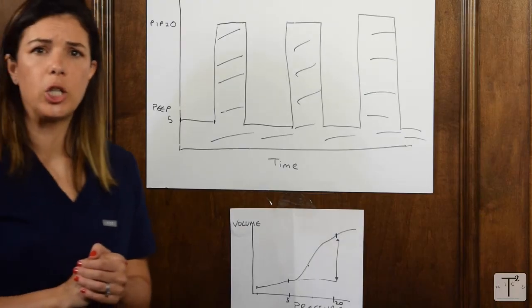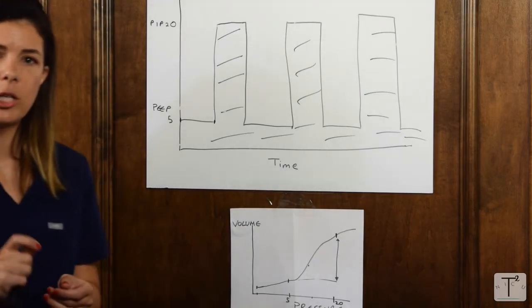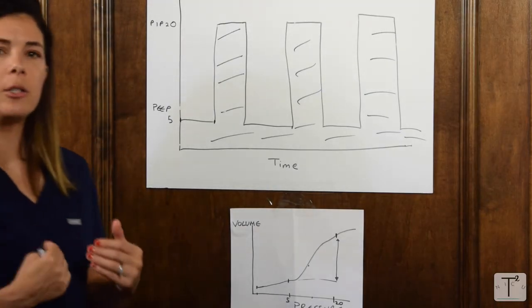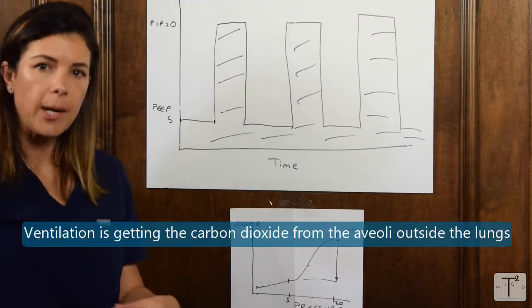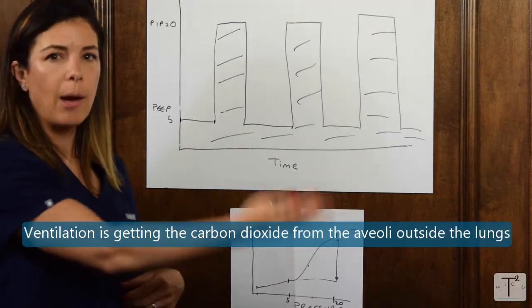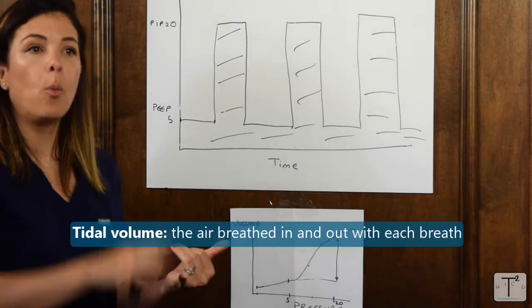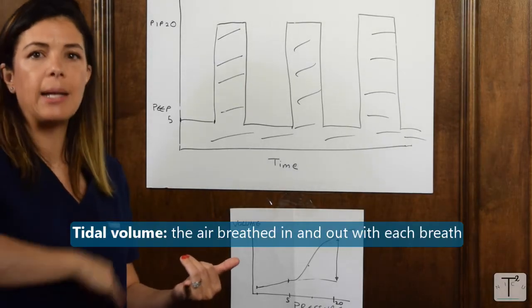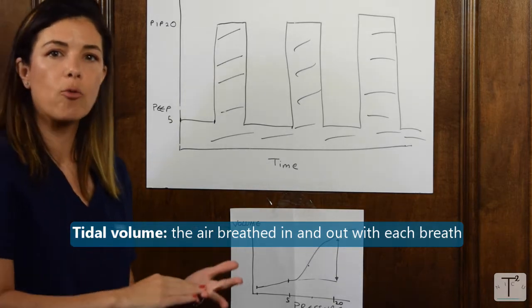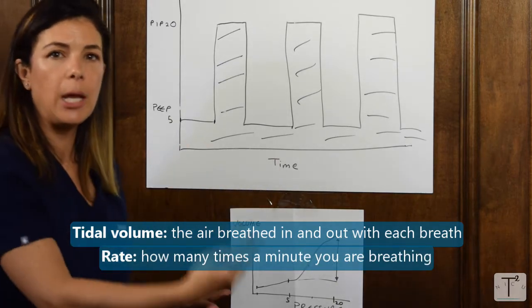Now let's talk about ventilation. What did we say that ventilation was dependent on? What are we trying to do with ventilation? We're trying to get the carbon dioxide from the alveoli outside the lungs. What's important is the tidal volume, which is the air breathed in and out with each breath, as well as the rate. How many times a minute you're breathing.